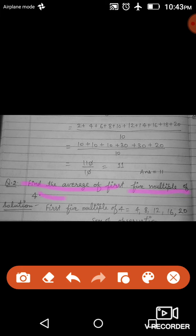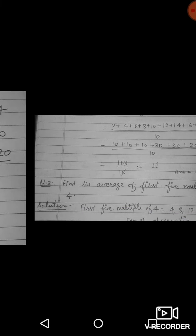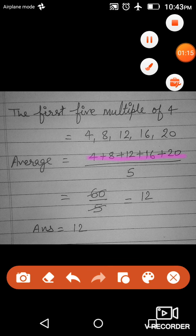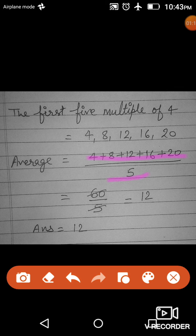Question number two: Find the average of first five multiples of four. First five multiples of four is equal to 4, 8, 12, 16, and 20. Average is equal to sum of observations: 4 plus 8 plus 12 plus 16 plus 20 divided by 5 is equal to 60 divided by 5.